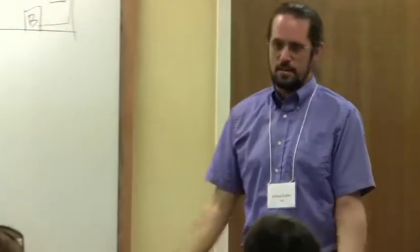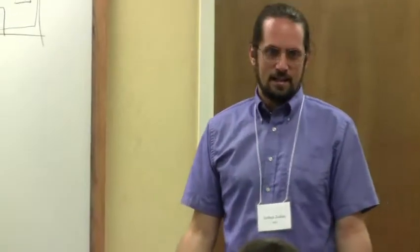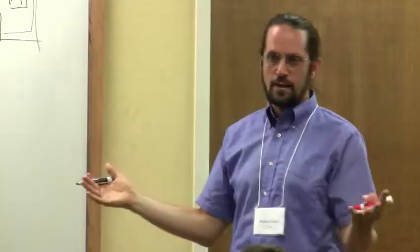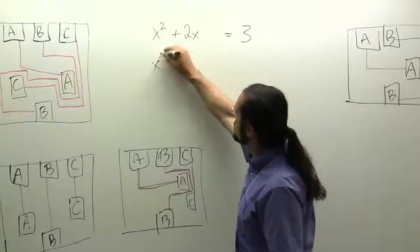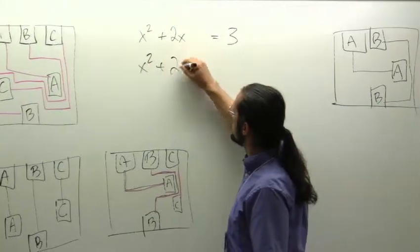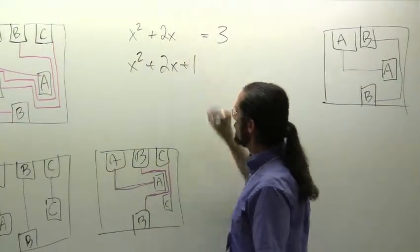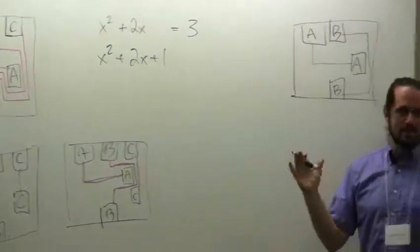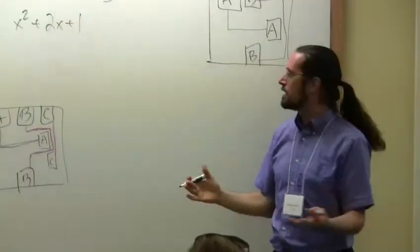If it just had x squared, it would be easy. It would be nice if I just had something squared there. Boy, I wish I had a plus 1 here. This would just be so much easier — that would just be great, because then I have this nice perfect square.